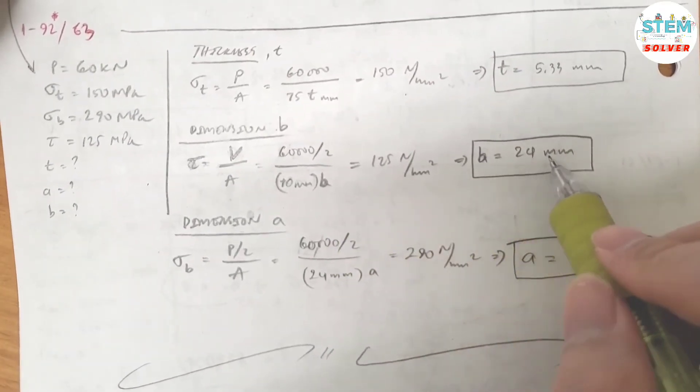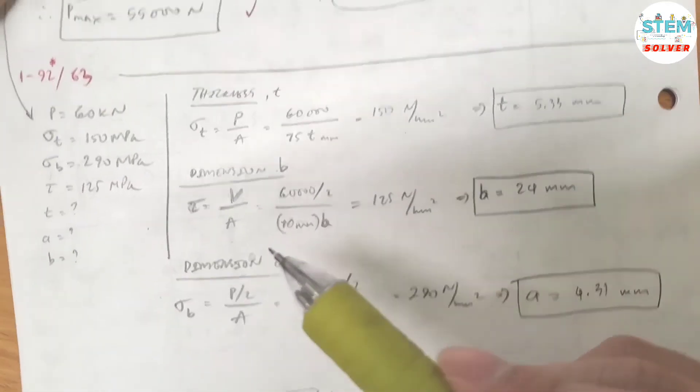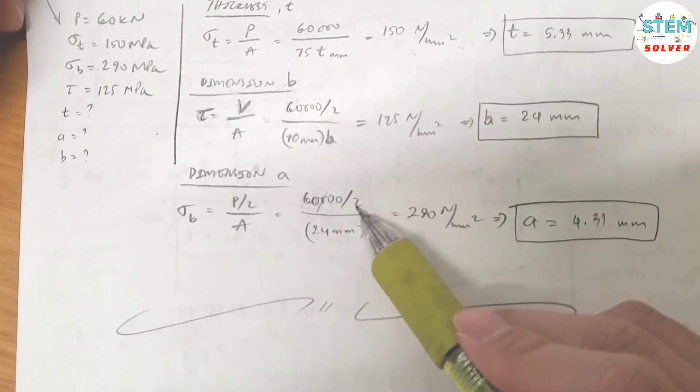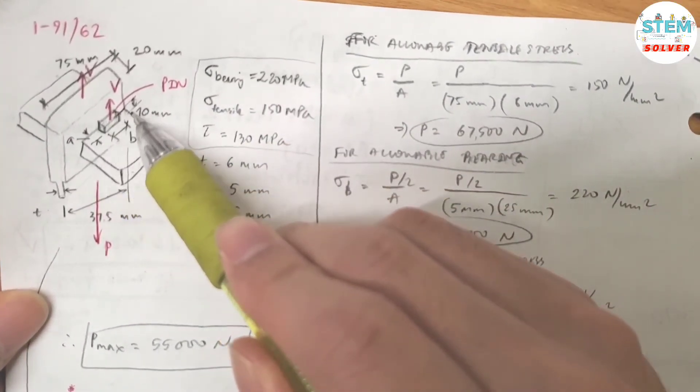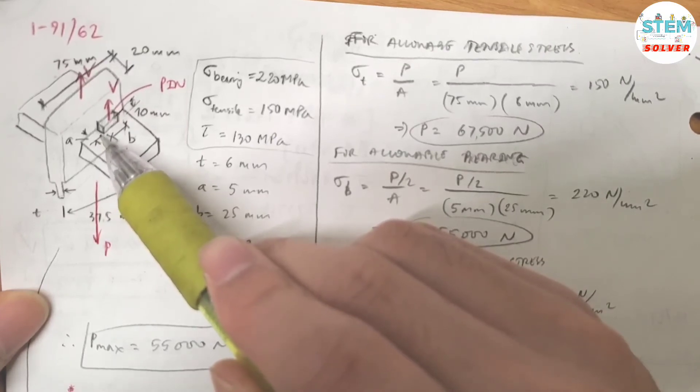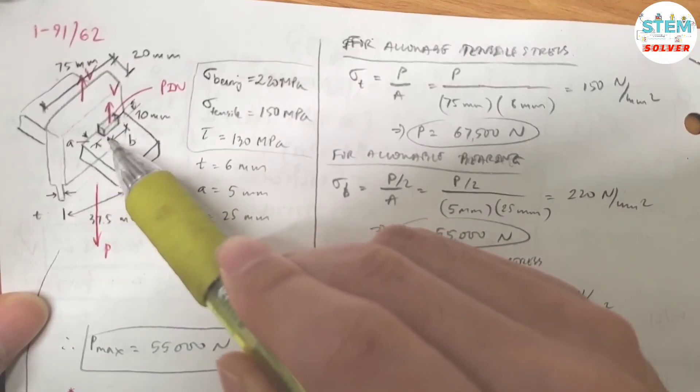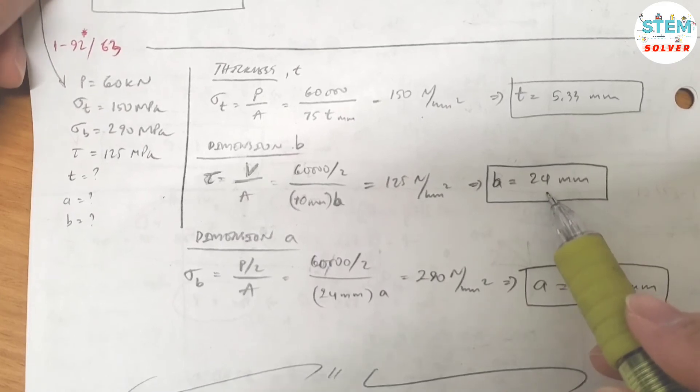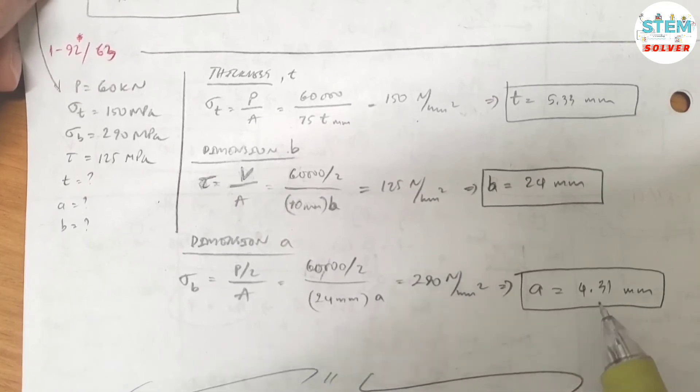Setting 10 B equal to 125, you get B equals 24 mm. Now for dimension A, use the bearing stress. Again, you have bearing force on both sides, so divide by 2. The area is 24 A - the width is A and the length is B which we just found as 24 mm. Setting this equal to the allowable bearing stress of 290 MPa, you get A equals 4.31 mm. That's the answer for this problem.